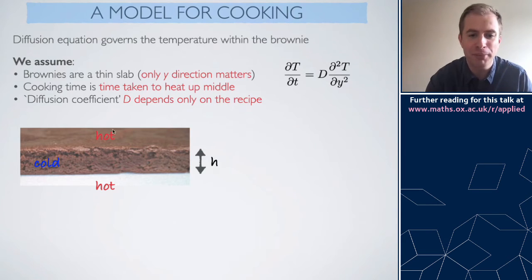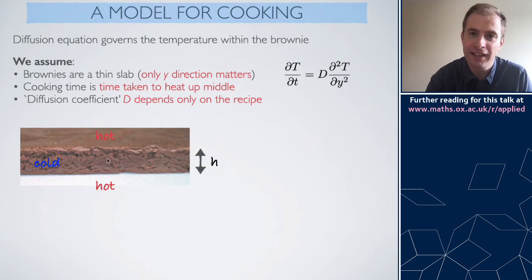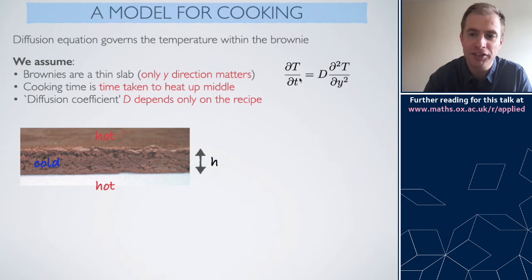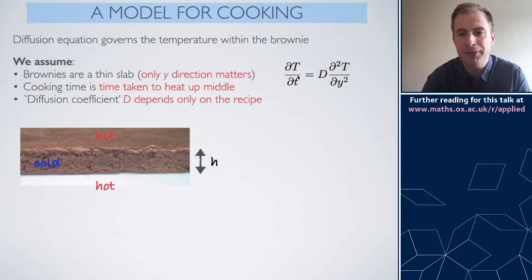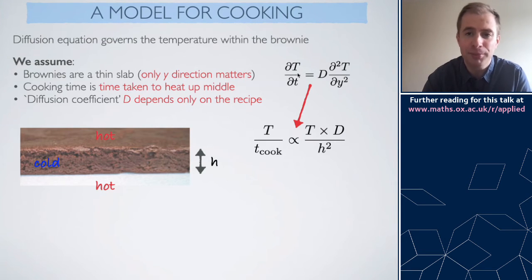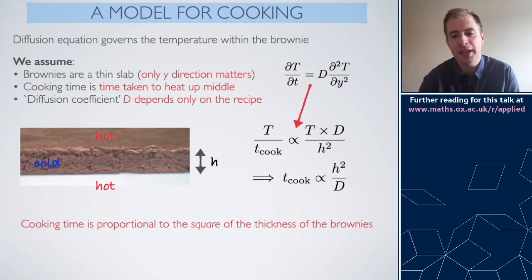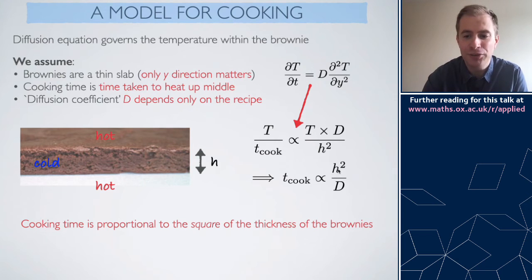I'll think only about what happens in the vertical direction Y, and assume that cooking means putting the brownie in the oven so the top and bottom are hot, and I need to get the middle to that higher temperature — heat must diffuse into the centre of the brownie. Differentiating with respect to time is like dividing by time, so I'd have a 1/t_cook on one side; differentiating with respect to Y is like dividing by the thickness H. Rearranging, the time taken to cook scales as the thickness squared: cooking time is proportional to the square of the thickness.